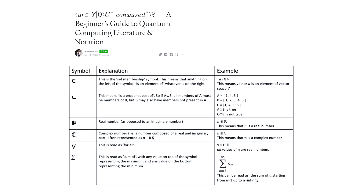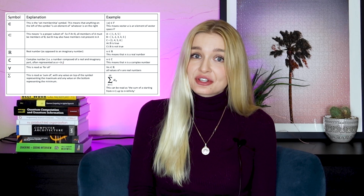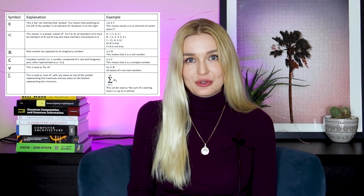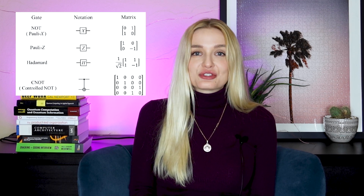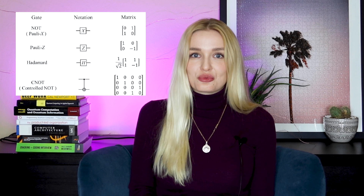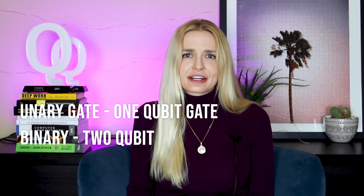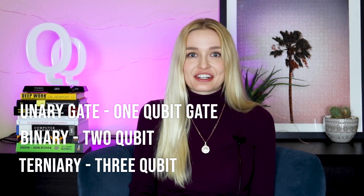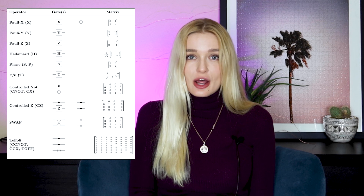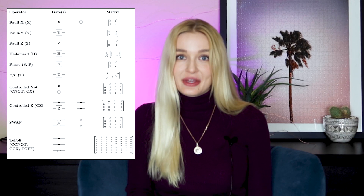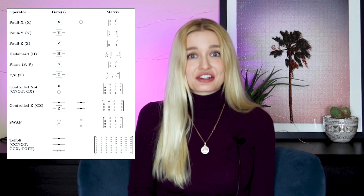You should also know a few things about set notation — for example, the set membership symbol: what is on the left, the state A, is an element of the vector space on the right. You should also know things like the real number symbol and the complex number symbol. Then you'll need to learn the symbolism for quantum operators and gates. This is not something you need up front before you start learning about quantum computing, but you'll see very quickly why linear algebra is so important. One of the very first things you learn is quantum gates — all the various unary (one qubit), binary (two qubit), and ternary gates. These gates are just matrix operators, and we apply that matrix to the state of the qubit.